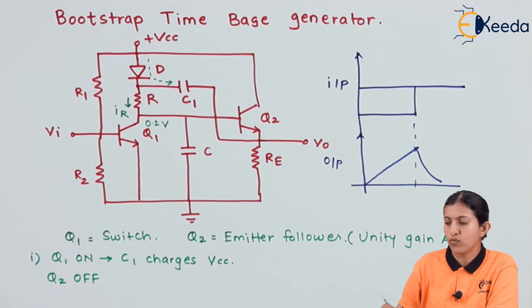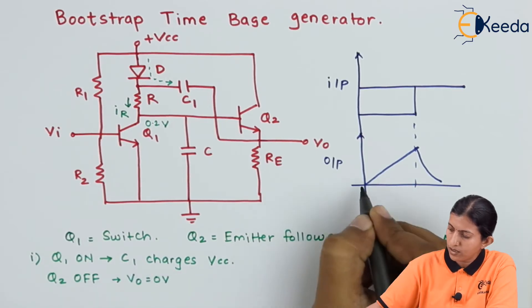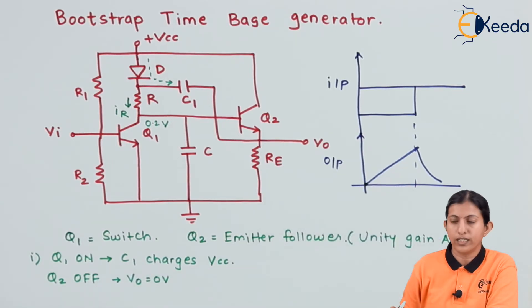And because of the base voltage being less, the output voltage is zero. So here we get zero voltage because transistor Q2 is off.